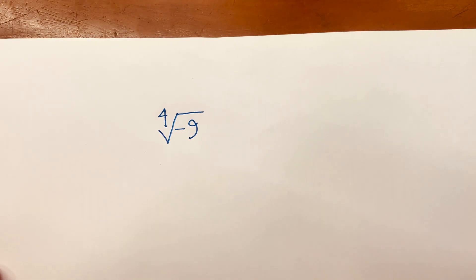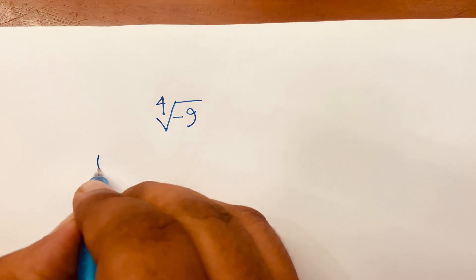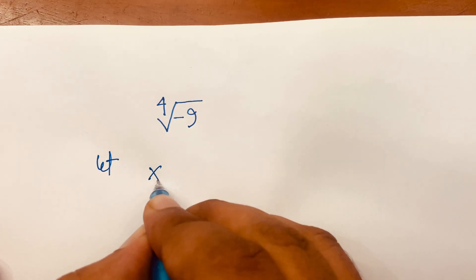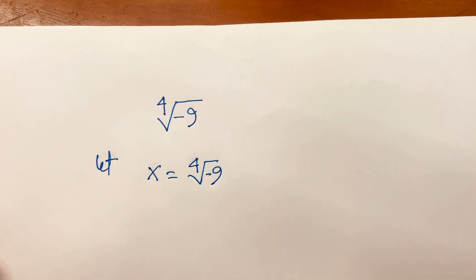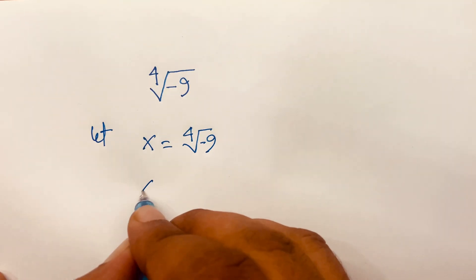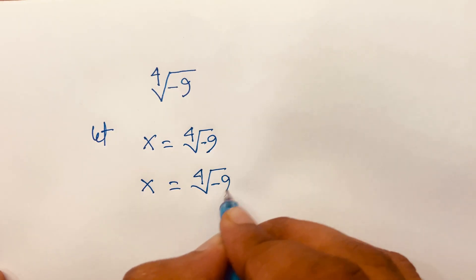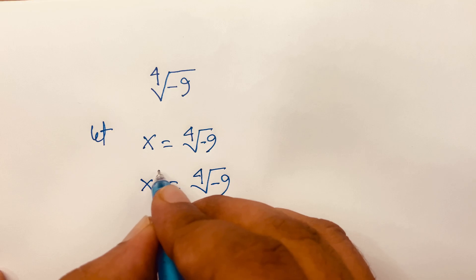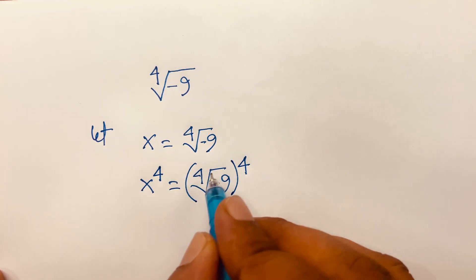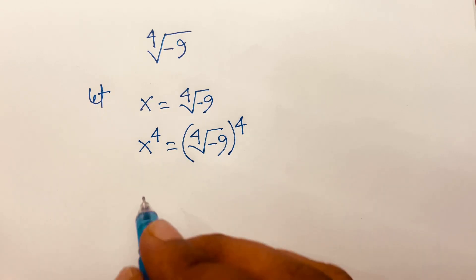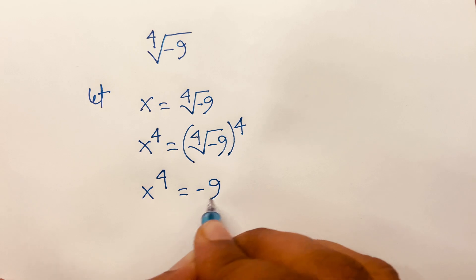How to solve 4th root of minus 9? First of all, let x be equal to 4th root of minus 9. Then I can say x is equal to the 4th root of minus 9. I use both sides to the power of 4, so the 4s cancel. This equation becomes x to the power 4 is equal to minus 9.